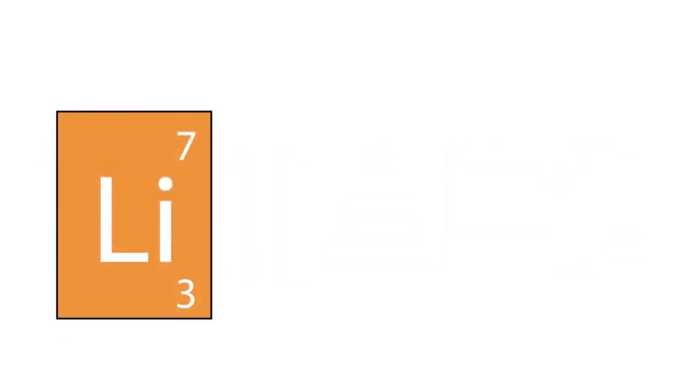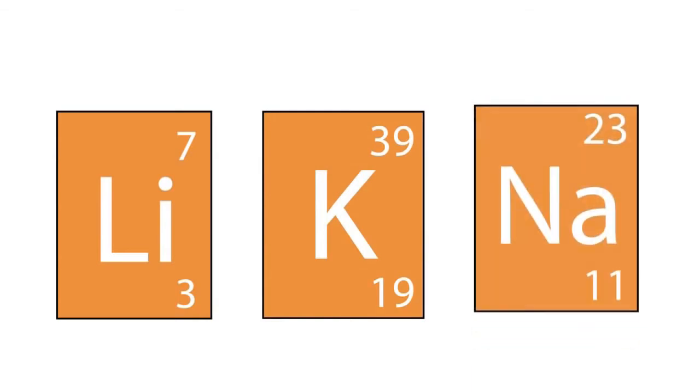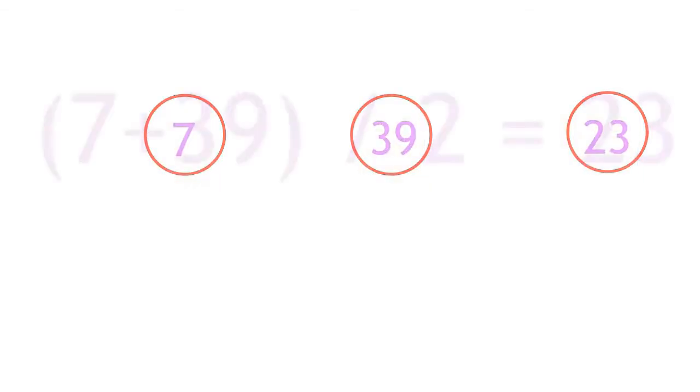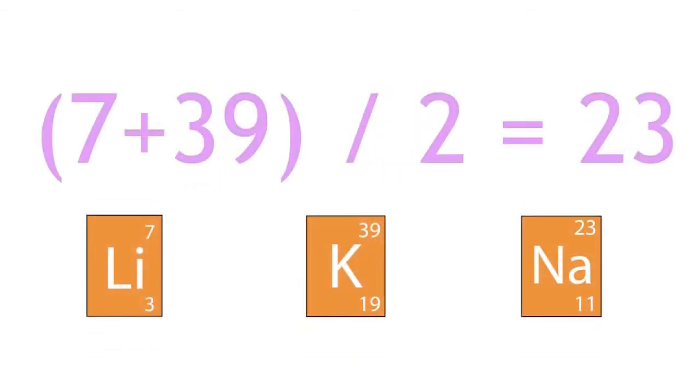An example of one of these triads was lithium, sodium, and potassium. The interesting characteristic of triads was that when they were placed in order of their atomic mass, the middle element always had an atomic mass which was an average, or very close to an average, of the other two elements in the triad.